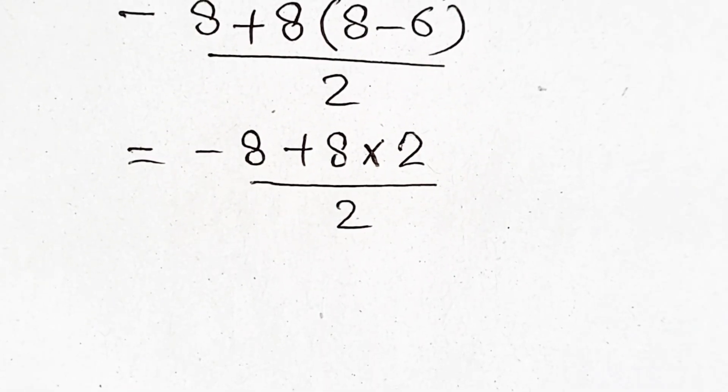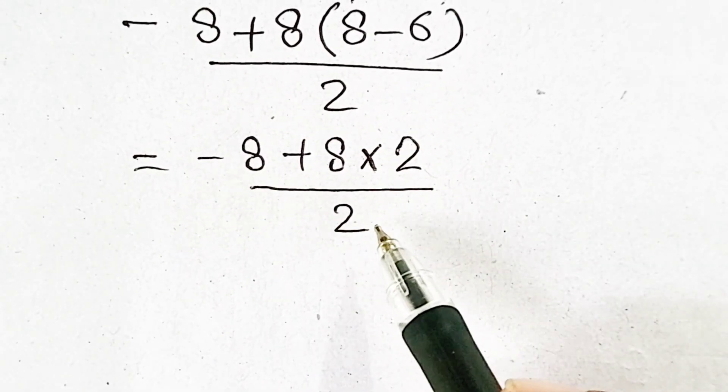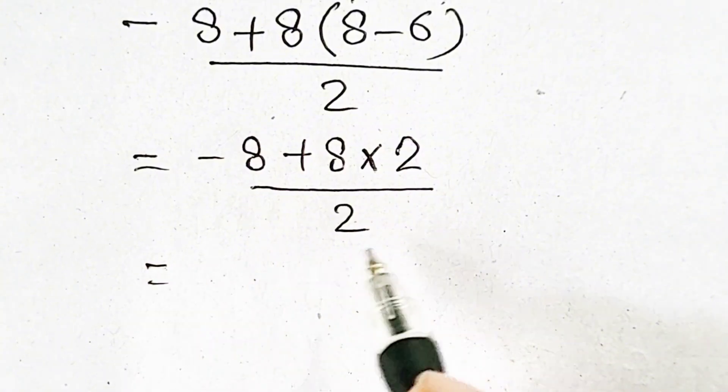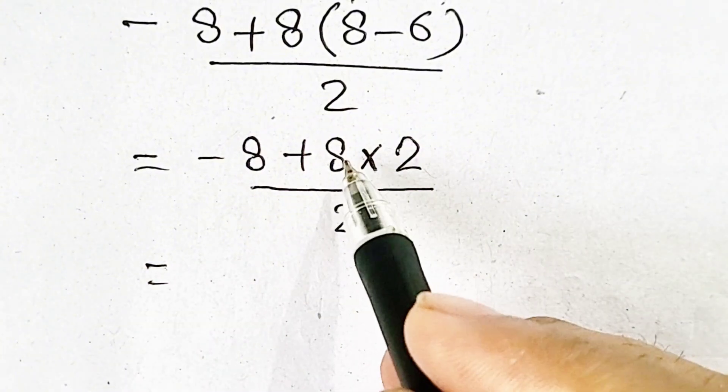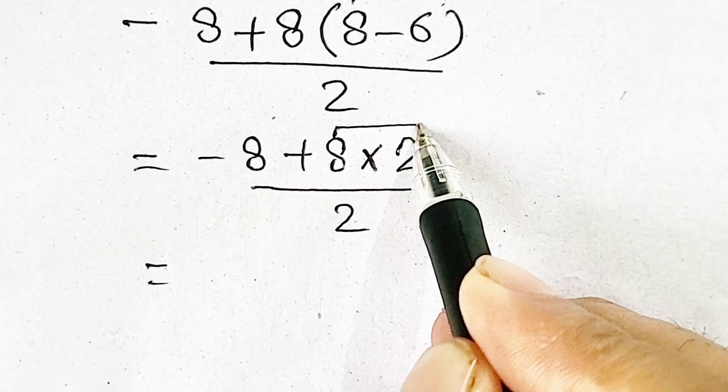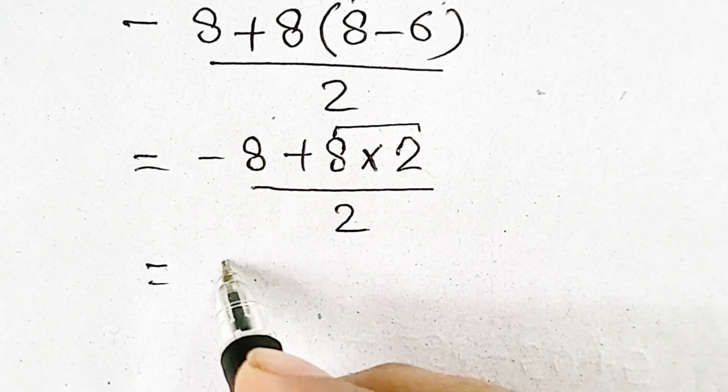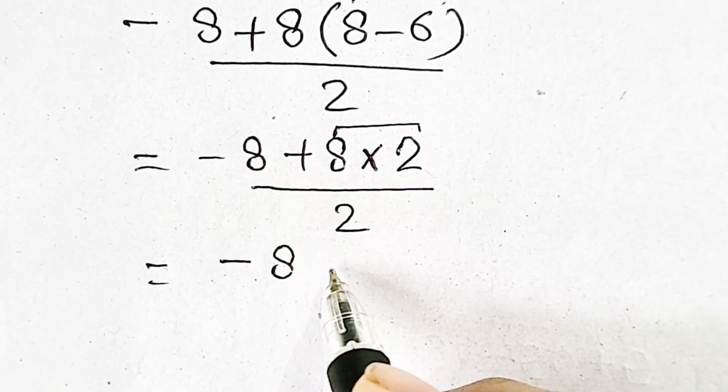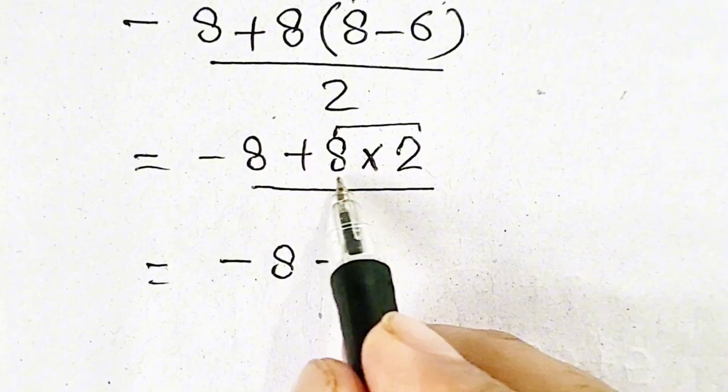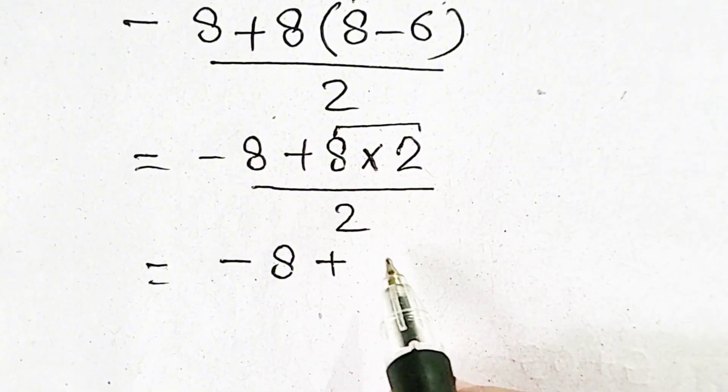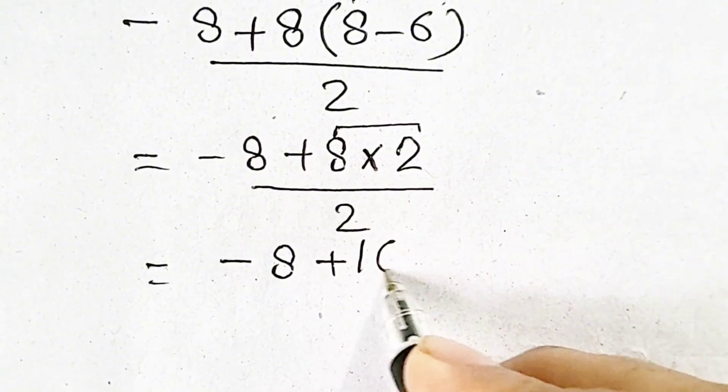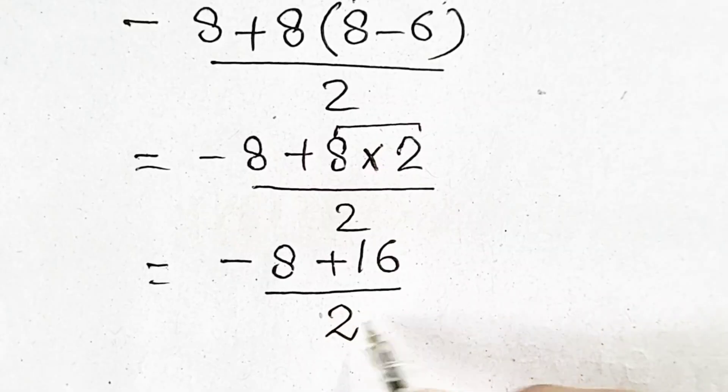Now, don't cancel 2 and 2. According to PEMDAS, we have to multiply first. We will get minus 8 plus 8 times 2, which equals 16, divided by 2.